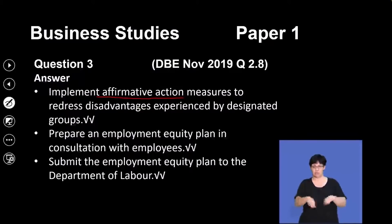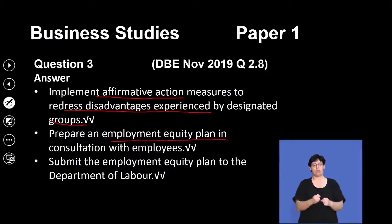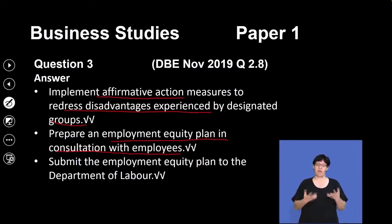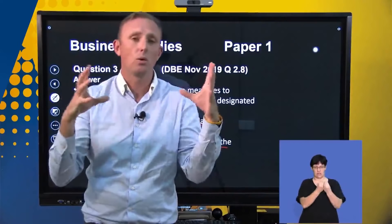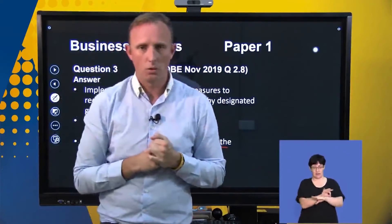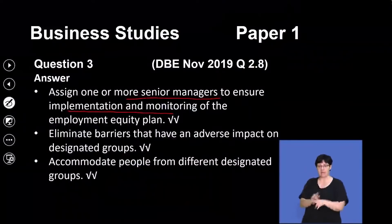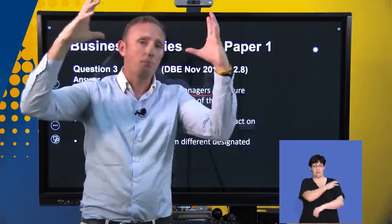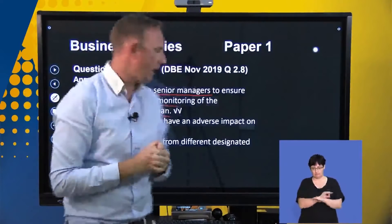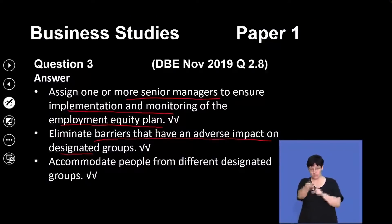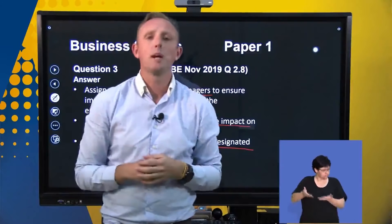Implement affirmative action measures to address disadvantages experienced by certain groups in the past. We have to prepare an employment equity plan in consultation with the employees to make sure everyone is on the same page. Then we have to submit the employment equity plan to the Department of Labour — there's a threshold in terms of how big your organization is before you actually have to submit your plan. You have to assign one or more senior managers to ensure the implementation and monitoring of the employment equity plan.